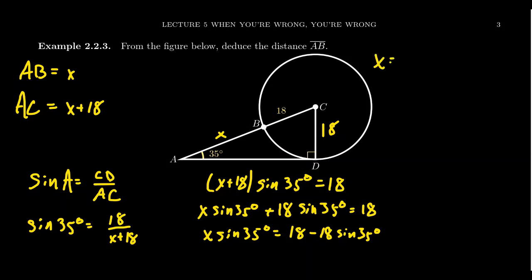We end up with X equals, factoring out 18 on the right-hand side, 18(1-sin(35°))/sin(35°). This is the exact answer. You might be tempted because sin(35°) appears on top and bottom to cancel it out.